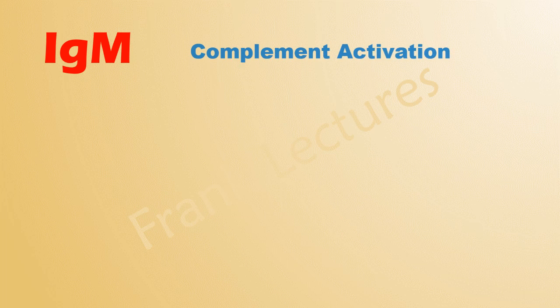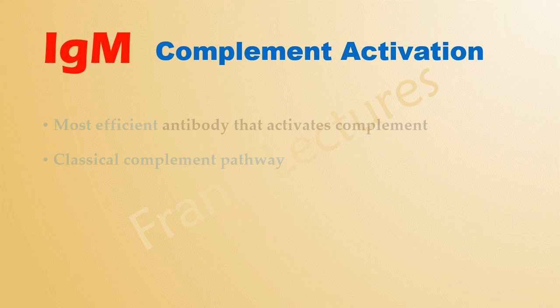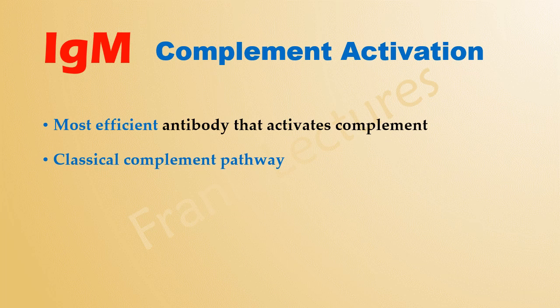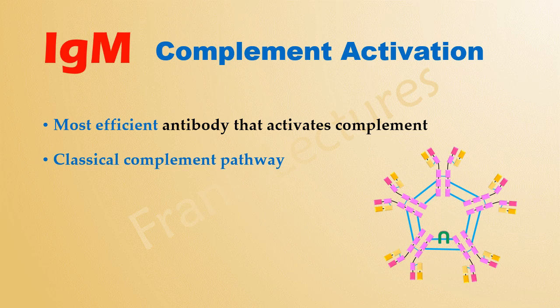IgM is the most efficient antibody for activating the classical complement pathway. This is because of its large size with multiple antigen-binding sites, meaning a single IgM antibody can initiate the activation.